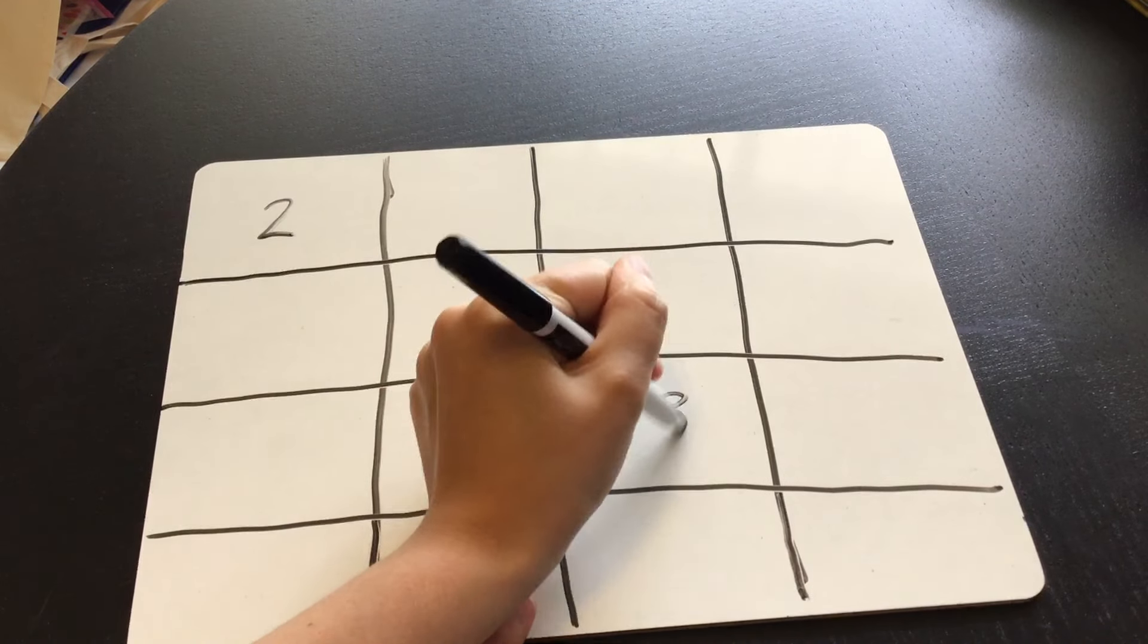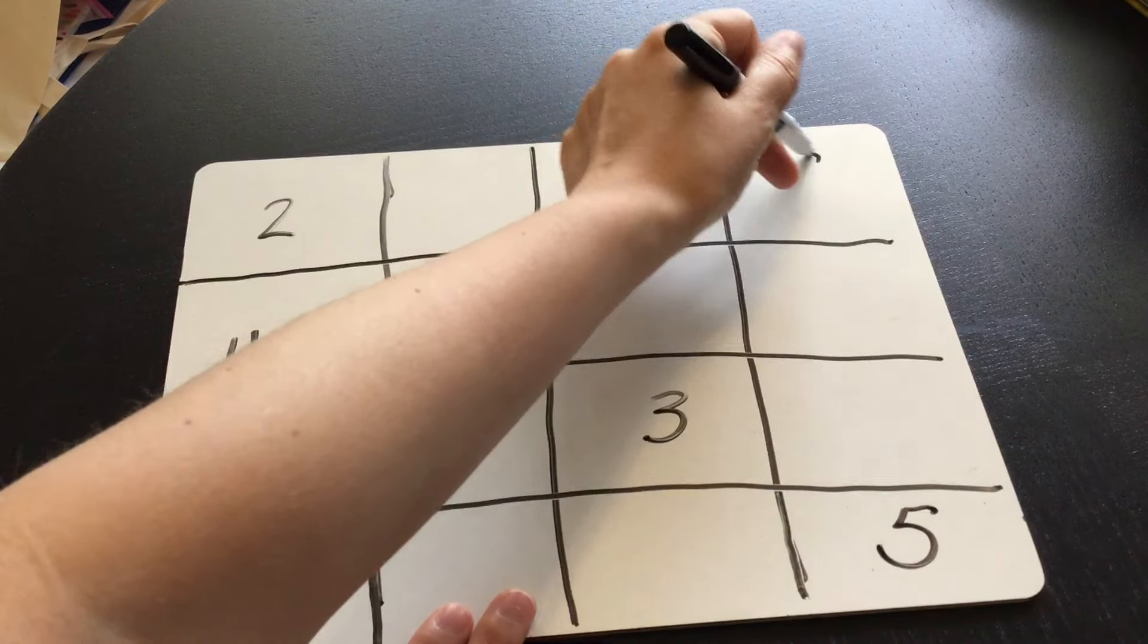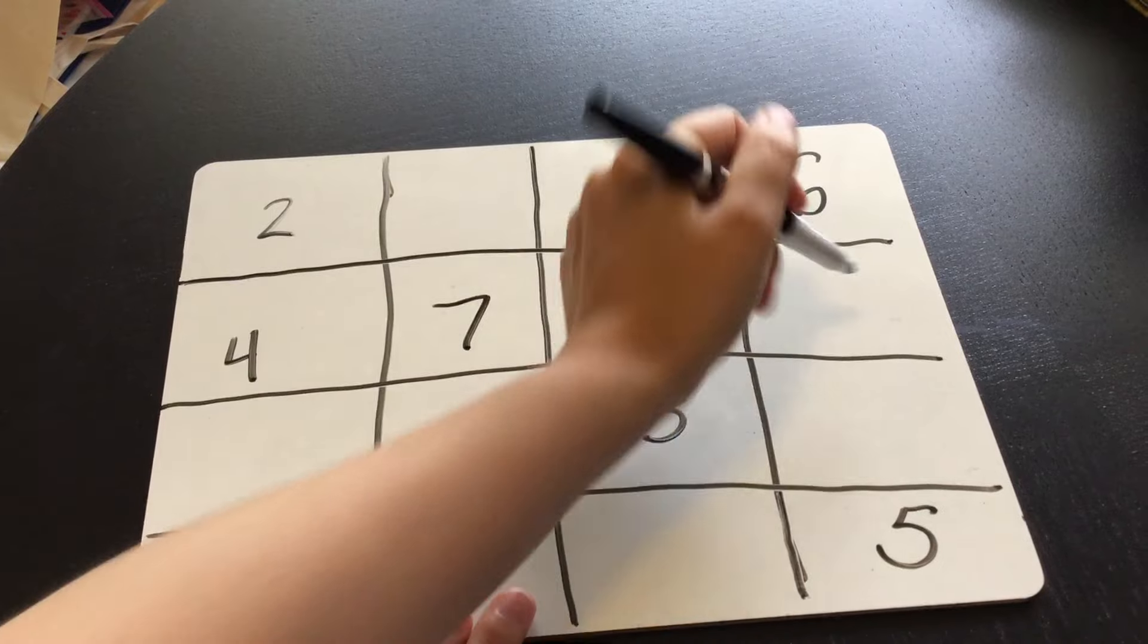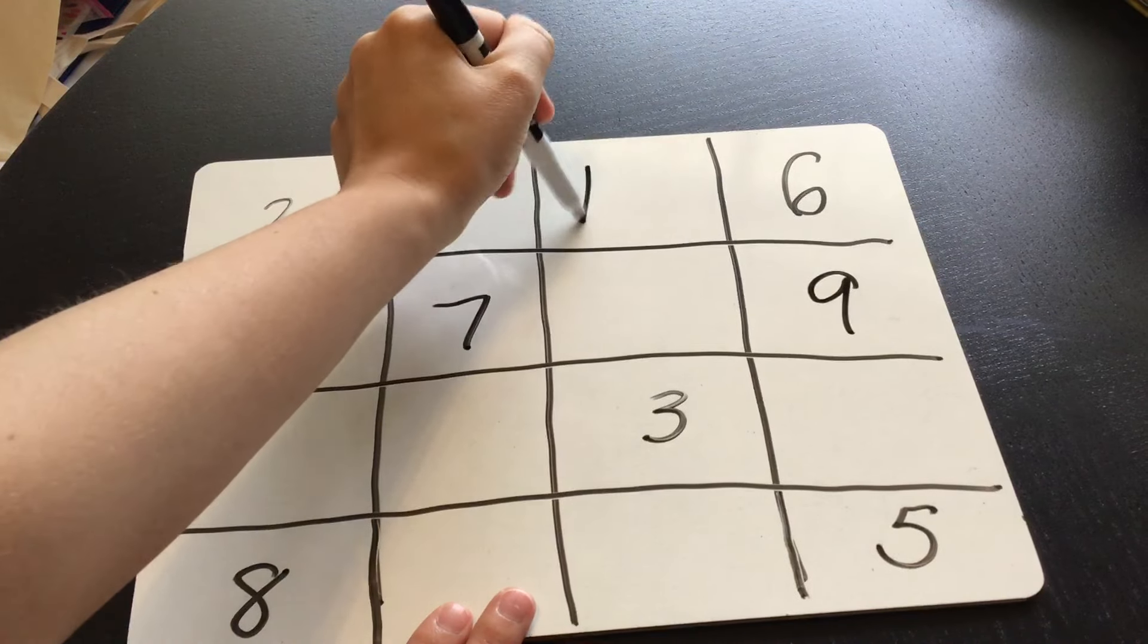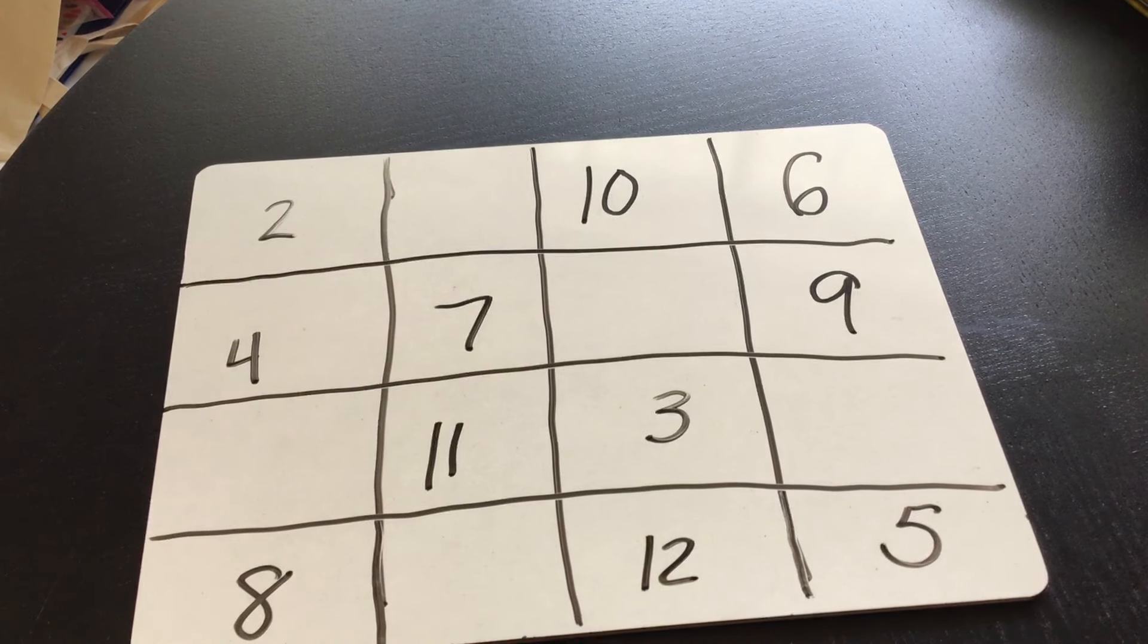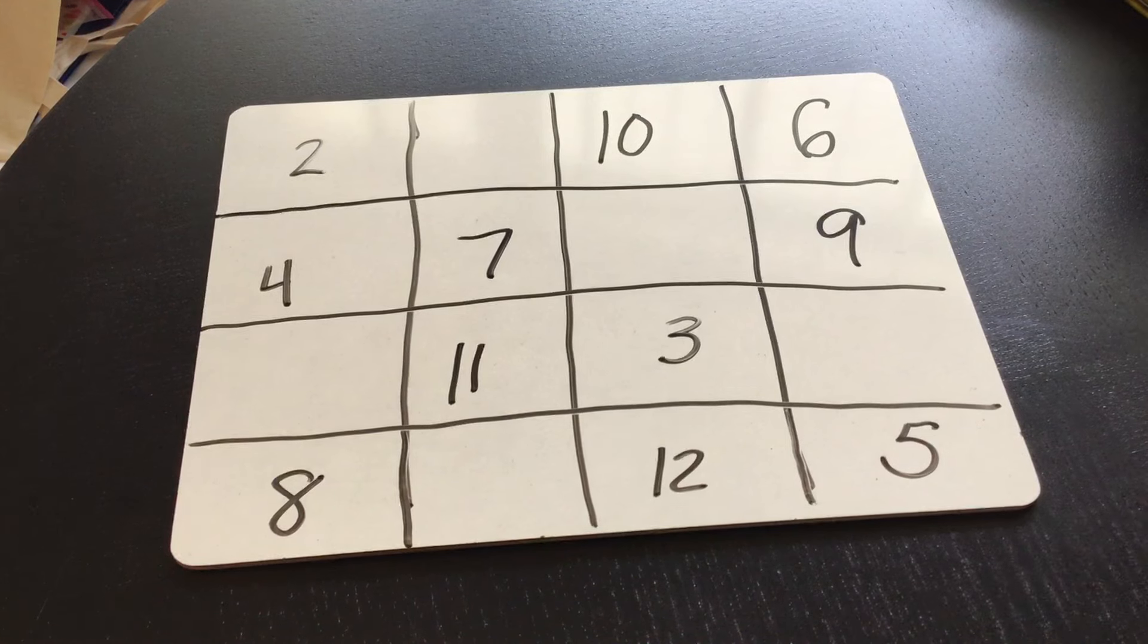Two, three, four, five, six, seven, eight, nine, ten, eleven, twelve. All right, two up to twelve is the numbers that I can add together on the dice.